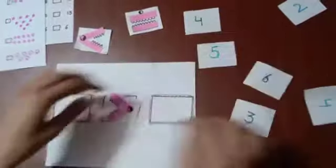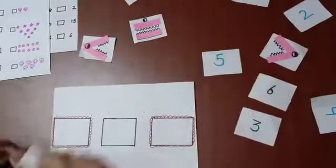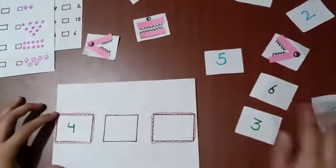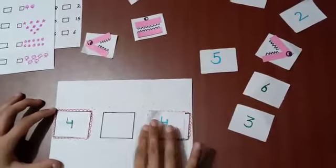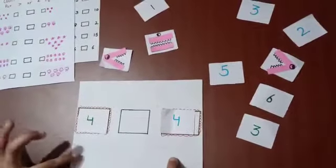Now let's see the next example. If we have 4 here and we have 4 here, what are the two numbers? Equal.